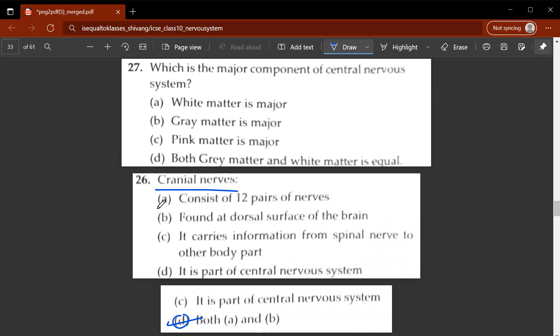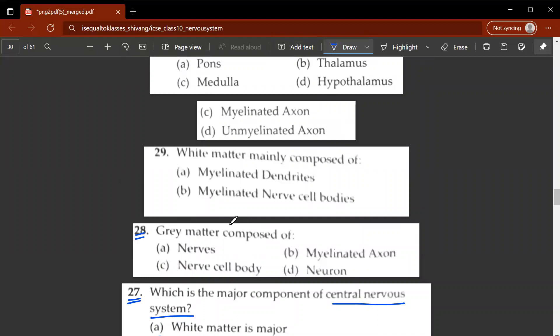26th question. Cranial nerves. Let's look at the following options. Consists of 12 pairs of nerves found at dorsal surface of the brain carries information from spinal nerve to other body parts. It is part of a central nervous system. So the correct option would be A. It consists of 12 pairs of nerves. 27th question. Which is the major component of central nervous system? So the correct option would be B. Gray matter is major. 28th. Gray matter is composed of what? It is composed of C. No cell body. 29th question. White matter is mainly composed of what? So it is composed of C. Myelinated axon.